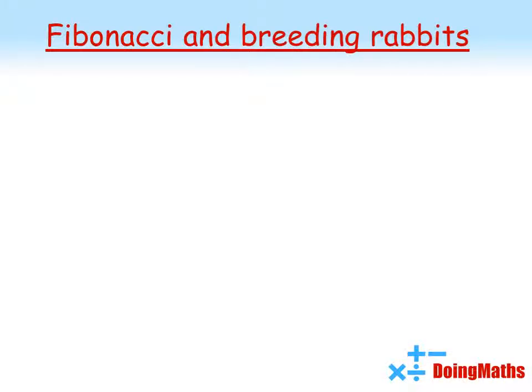Fibonacci, also known as Leonardo of Pisa, was an Italian mathematician born in roughly 1175.